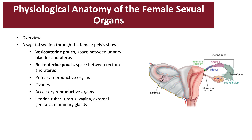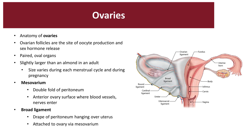The peritoneum folds over selective pelvic organs and lines two major pouches: the anterior region called the vesicouterine pouch, which forms the space between the urinary bladder and the uterus, and the posterior recto-uterine pouch that forms the space between the rectum and the uterus. The ovaries are paired oval organs located in the female pelvis, anchored by specific ligaments: the broad ligaments, the ovarian ligaments, and the suspensory ligaments. There is a double-fold peritoneum called the meso-ovarium, which attaches to each ovary at the hilum, the anterior surface of the ovary, where the majority of blood vessels enter and leave. Each ovary is supplied by both an ovarian artery and an ovarian vein.